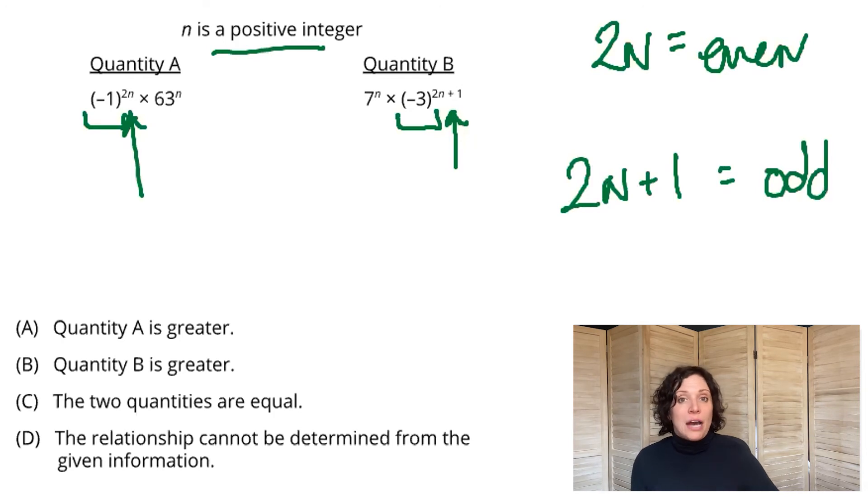So I already now know that with negatives in my basis, with positive integer as my unknown, and then with even and odd as my power, this is 100% a positives and negatives problem. I don't even care what the numeric values of those bases are anymore. So let's look to see what it is exactly that we're being told in each of our quantities.